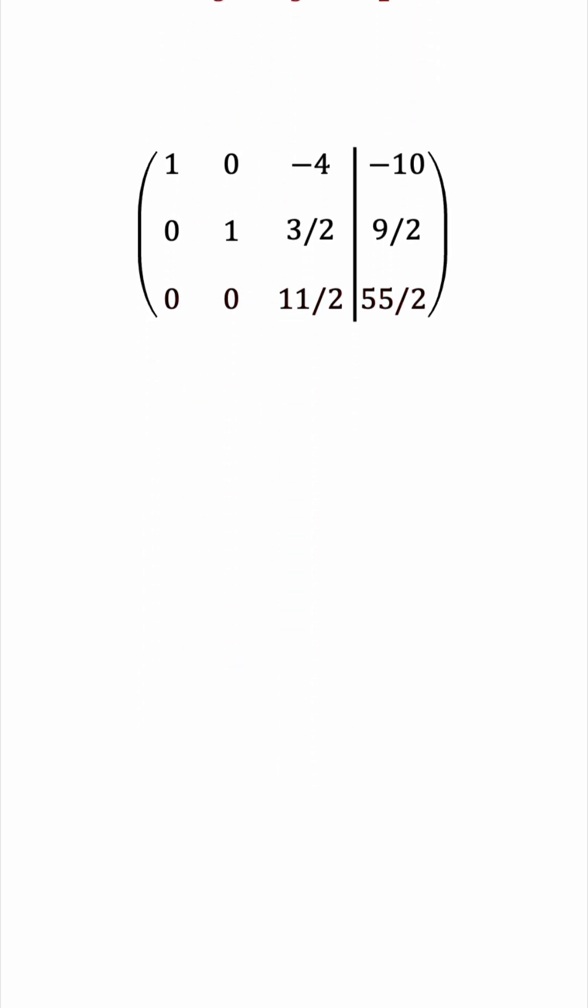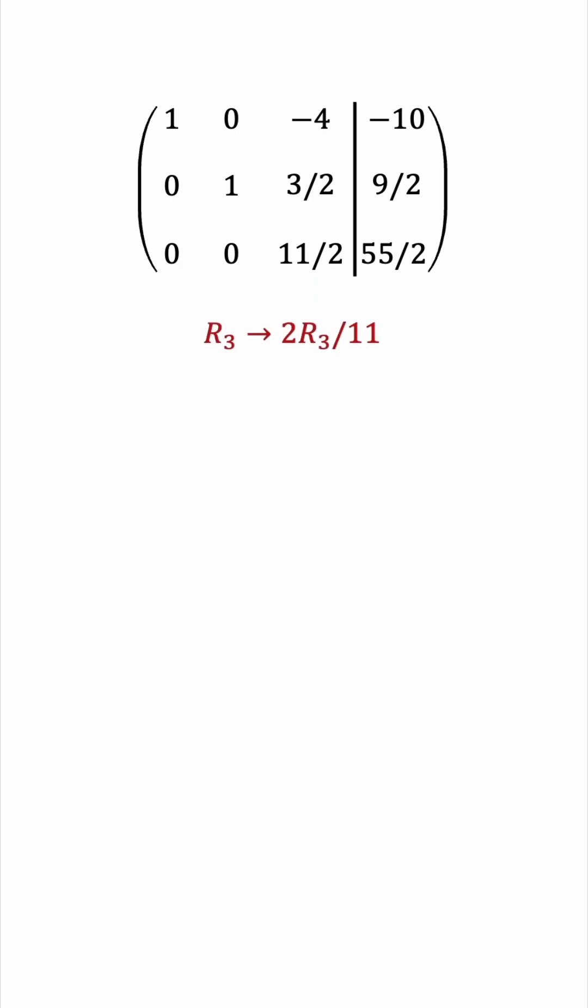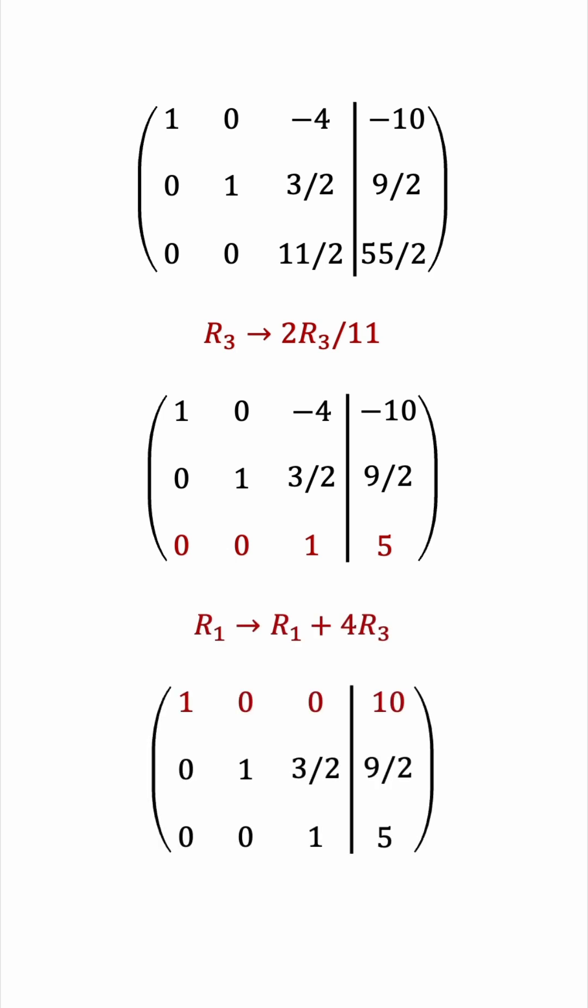Now let's multiply the third row by 2 over 11, and with that we have the third row completed. Now let's add 4 copies of the third row to the first row, giving us this augmented matrix.